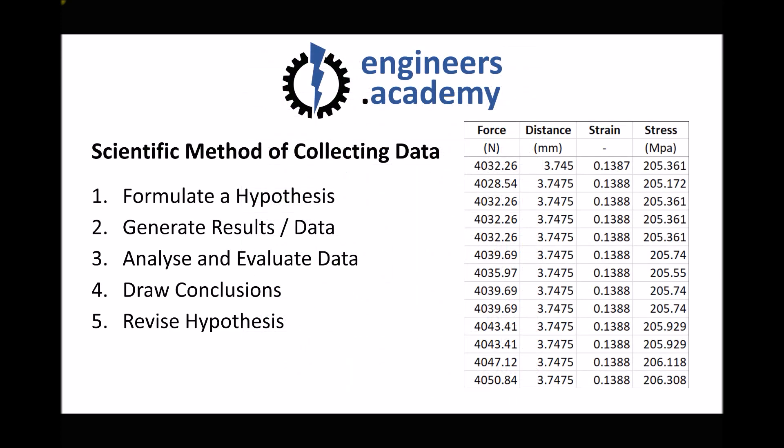Let's relate that quantitative data to the scientific method. Step one was to formulate a hypothesis. In this case, the hypothesis might be brass is stronger than steel, or steel is less elastic than brass—things we can test using an ultimate tensile test. Once we have our hypothesis, we can use a tensile test machine to generate results for different materials depending on our hypothesis.